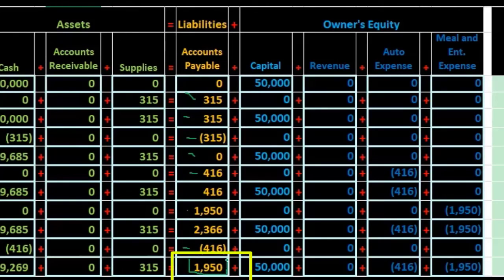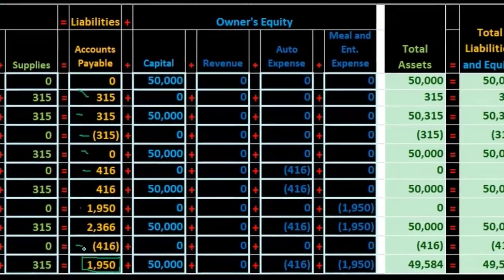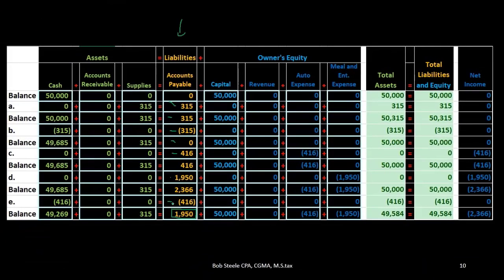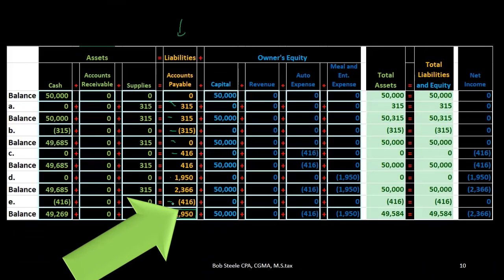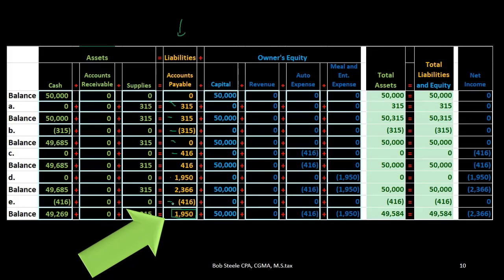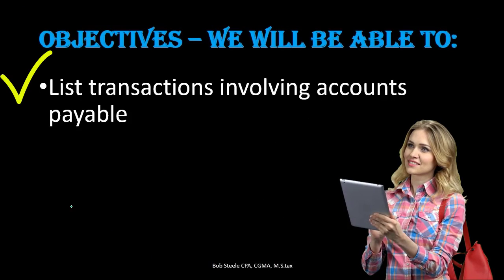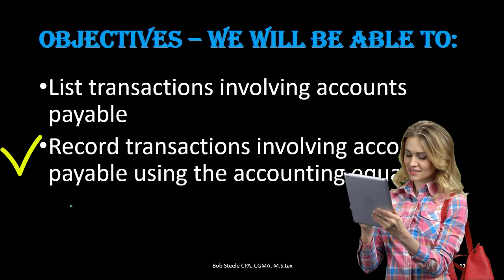That's the typical pattern in a payable account: we increase it when we incur a bill — something purchased on account that hasn't been paid yet — and at some point in the future we pay it and decrease that amount. We should be able to match increases to decreases as we go. That should be the expected pattern. Back to our objectives: we are now able to list and record transactions involving accounts payable using the accounting equation.